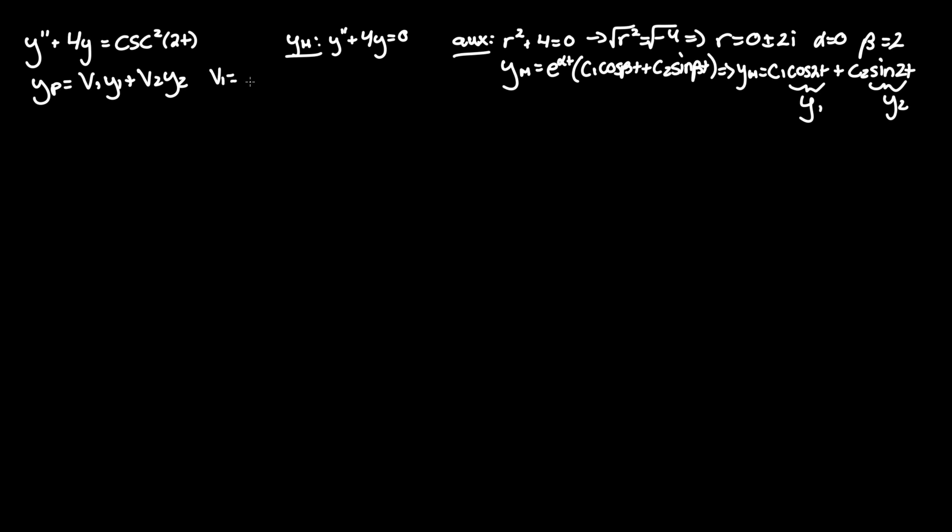And we'll be using the Wronskian approach since it's much more preferable in my opinion to system of equations. So v1 equals negative integral of y2 f of t over Wronskian, where f of t is the right-hand side, whereas v2 equals positive integral of y1 times f of t over Wronskian once more.